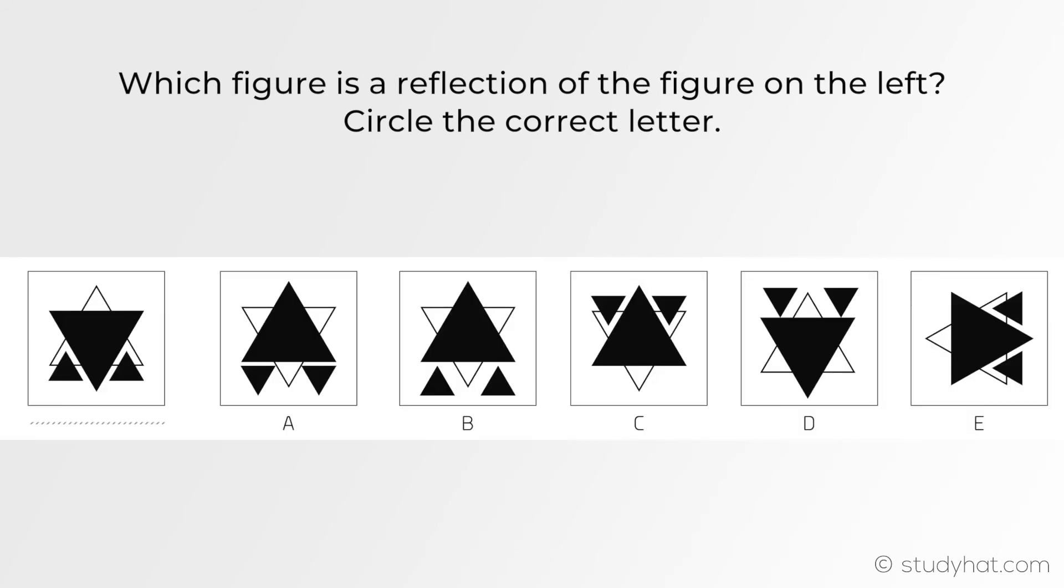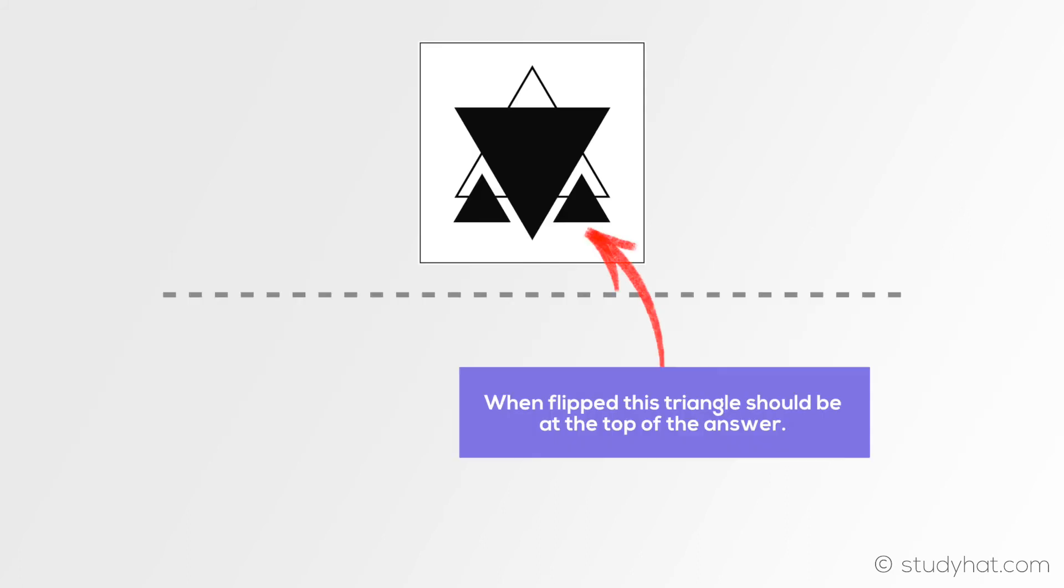The final example for today's lesson is a horizontal reflection. We can spot this due to the reflection line being underneath the question. Now all this really means is that what's on the top now simply goes at the bottom or what's at the bottom goes to the top.